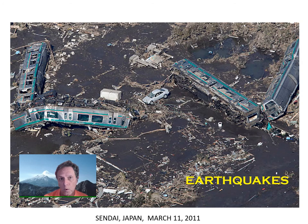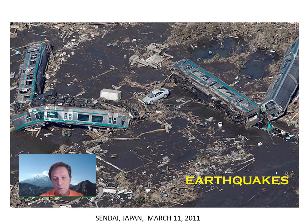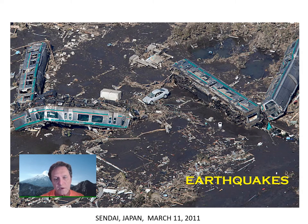We live in what's called the continental borderland, near the boundary of tectonic plates that are shifting against each other steadily but slowly. When faults meet and shift against each other — either up, down, or sideways — they fracture rock, and the fracturing of rock is what creates an earthquake.